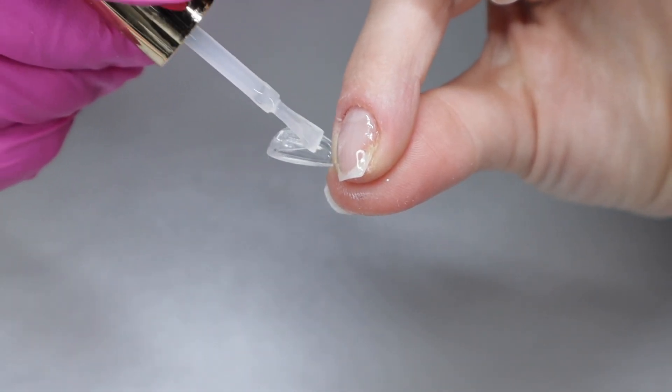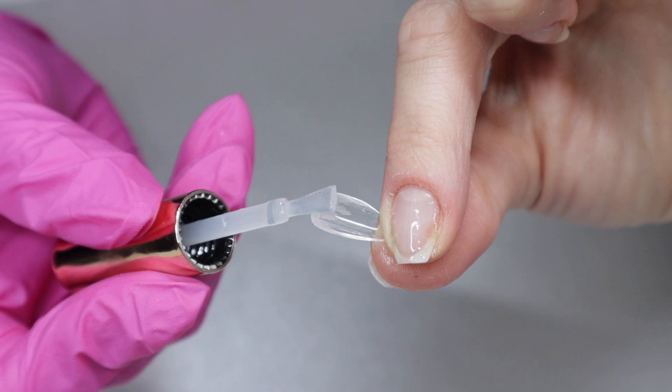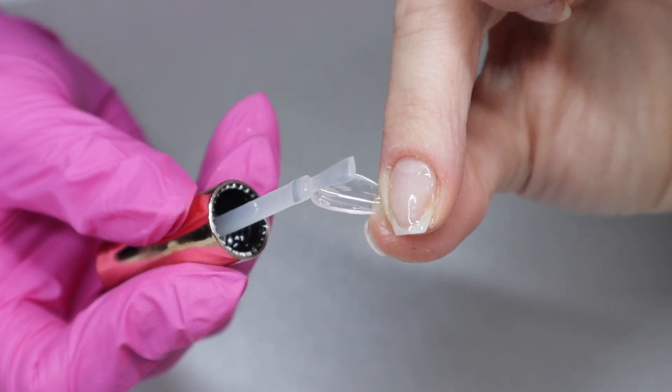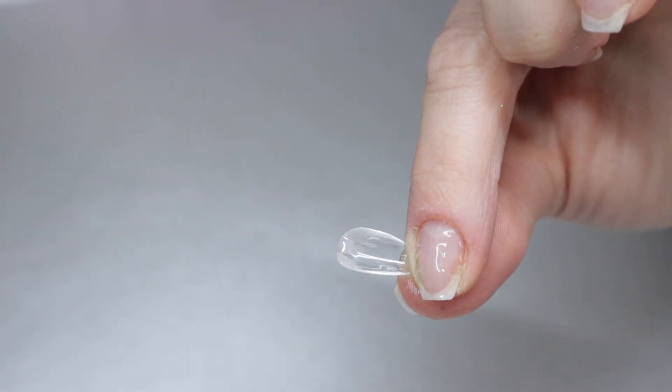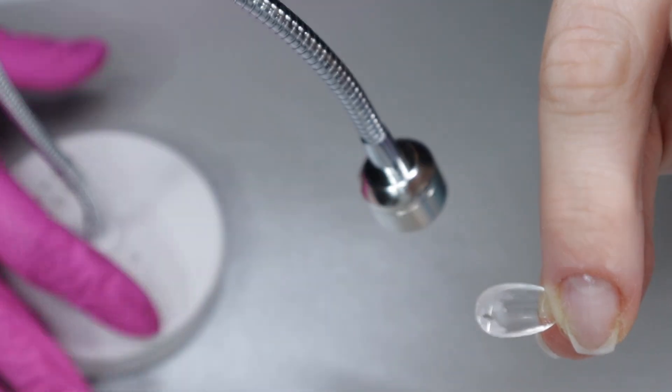I take the edge of the brush and I scrape it on the jelly tip so a nice little dollop of gel gets where the cuticle area is.